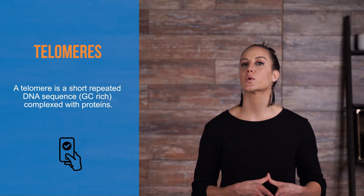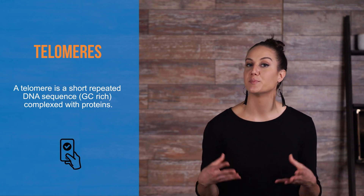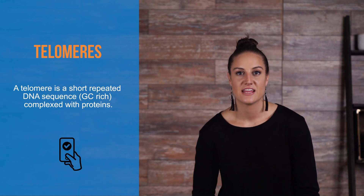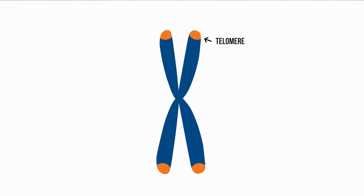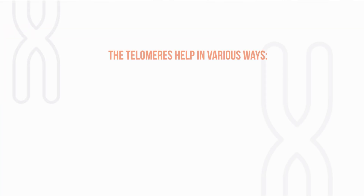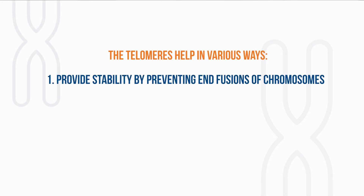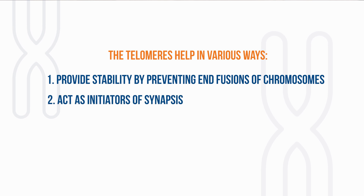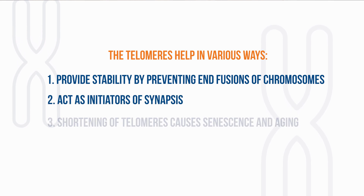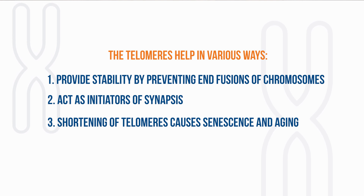A telomere is a short, repeated DNA sequence complexed with proteins. They are synthesized separately and later added to the chromosomal tips. The telomeres help in various ways. One, they provide stability by preventing fusions of chromosomes. Two, they act as initiators of synapses. Three, they help in the shortening of telomeres causing senescence and aging.